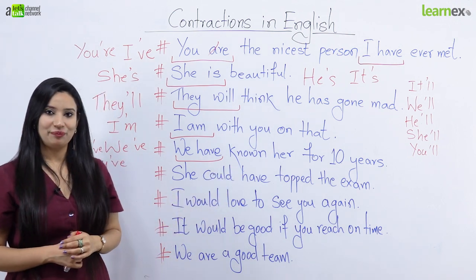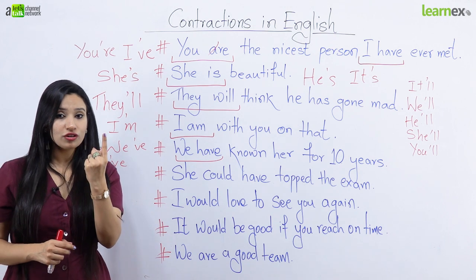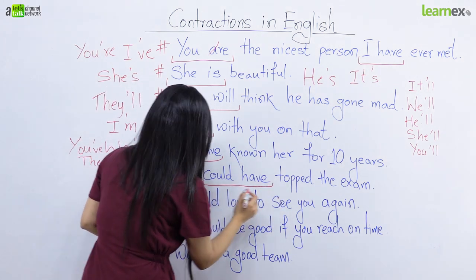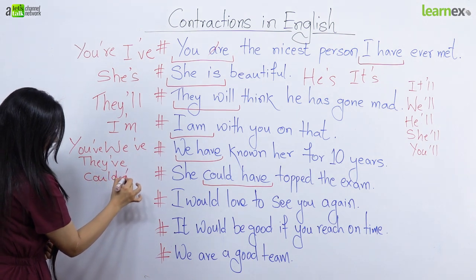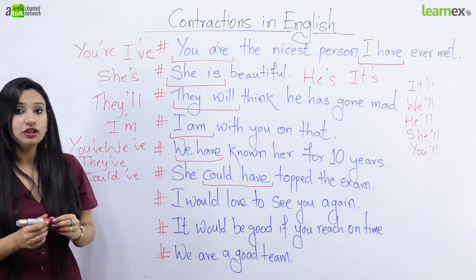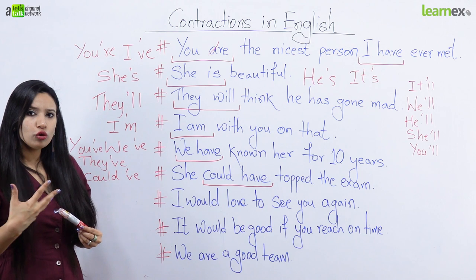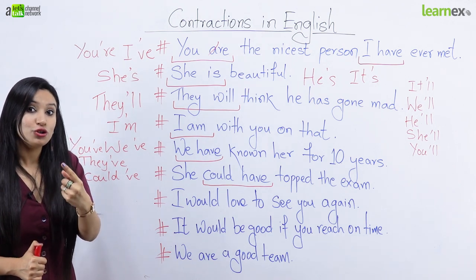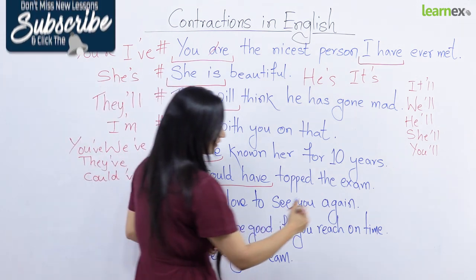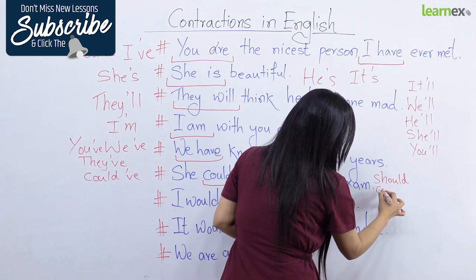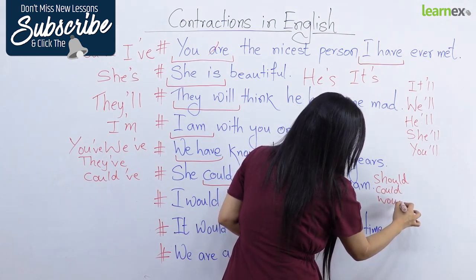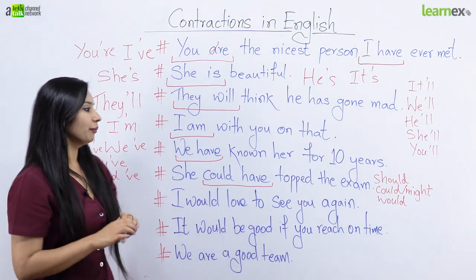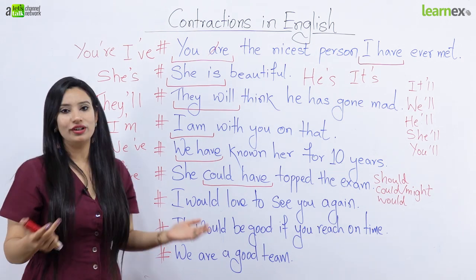Iske saath ab aage badhte hain: 'She could have topped the exam.' Yahan par agar aapne mujhe dhyan se suna hai, toh maine could aur have ko join karke banaya could've. Maine yahan par H nahi bola hai, isliye maine H ki jagah par apostrophe lagaya aur bola could've. Could have ki tarah aap aur kya use kar sakte hain? Would, should, might — toh aap woh sab use kar sakte hain. She should have topped the exam, she might have topped the exam, she would have topped the exam.